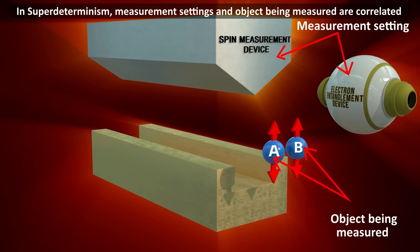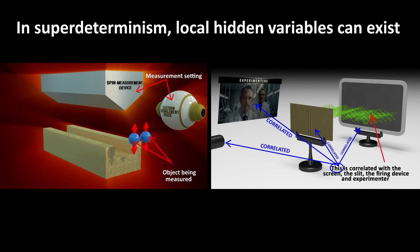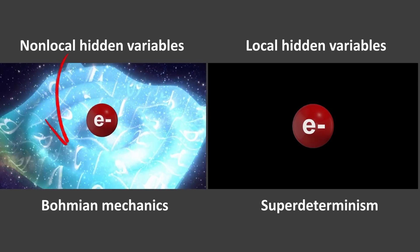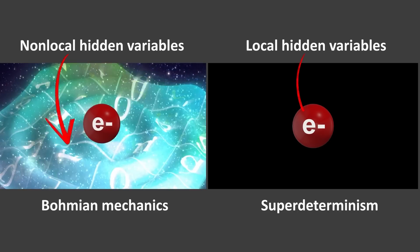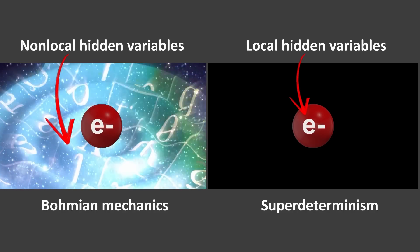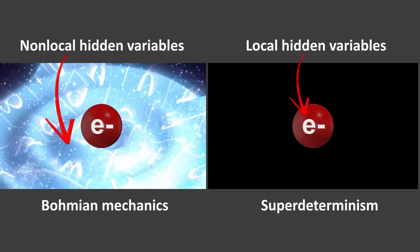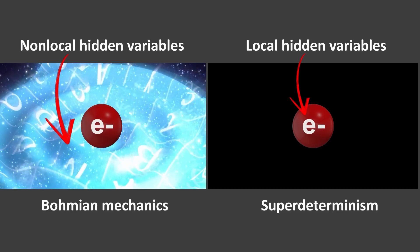So a super-deterministic theory can have local hidden variables, while still violating Bell's inequality, and reproduce all the predictions of quantum mechanics. Like Bohmian mechanics, super-determinism postulates real particles with real properties. But unlike Bohmian mechanics, the hidden variables can be local. Bell himself recognized that a super-deterministic theory could avoid some of the issues with non-local hidden variable theories.